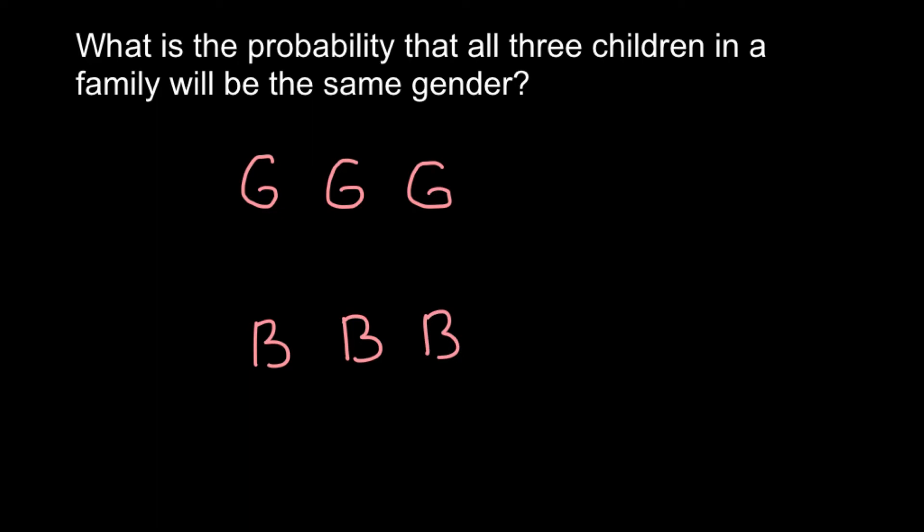So what is the probability that the first child would be a girl? The probability is one half. What is the probability that the second child would be a girl? Once again, the probability would be one half. And what is the probability that the third child would be a girl? Once again, we have only two choices, girl or boy, so equal chances, one half.